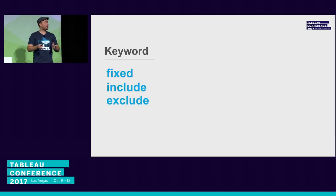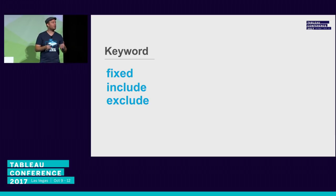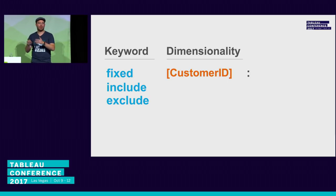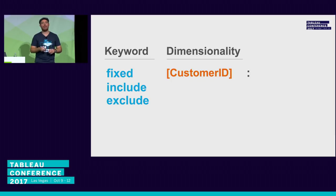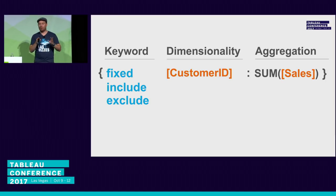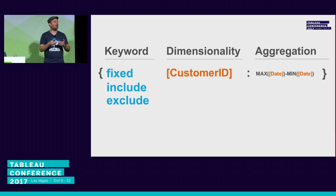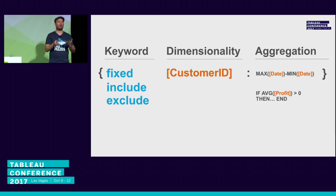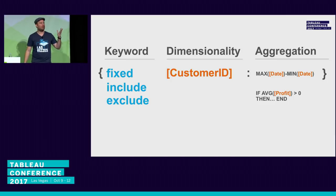There are three parts to a level of detail expression and three keyword types: fixed, include, and exclude. First is the keyword element. Then you have the dimensionality — at what level of detail you want it to compute, for example customer ID. Then a colon, followed by the aggregate expression such as sum of sales. We wrap it in curly braces for readability. LOD expressions can include multiple aggregations, chains of IF statements — they can get complex, so the curly braces help you see where they start and end.